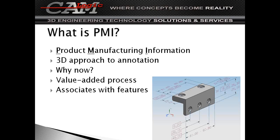What is PMI? It is product manufacturing information. Essentially, I think of it as a 3D approach to annotation. It's been a long time coming — they said it was going to be the biggest thing. I think it's because there's a lot of product-based manufacturing, and just the way that you interact with customers or suppliers, it really adds a lot of visibility to your models. It's a value-added process. And essentially it's not just a dead dimension — it actually associates in NX to your features. So it's a living, breathing dimension, just the same as any other dimension you put in while you're setting up the model. It connects right to the actual dimensions geometrically.